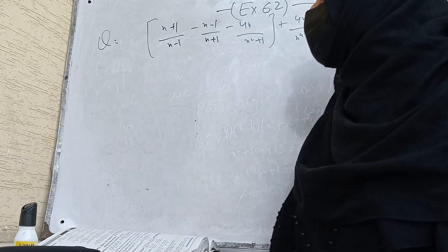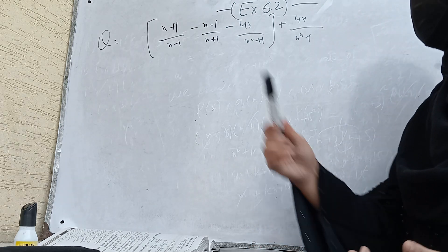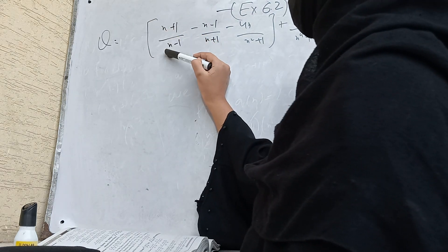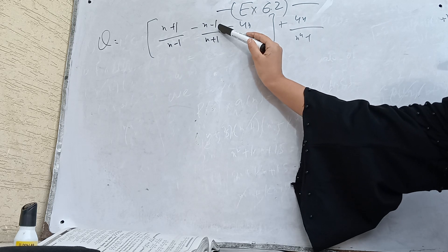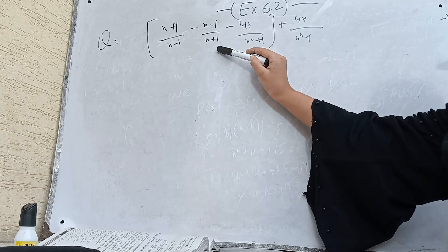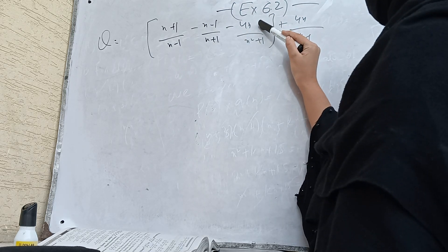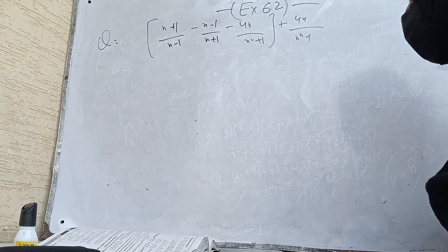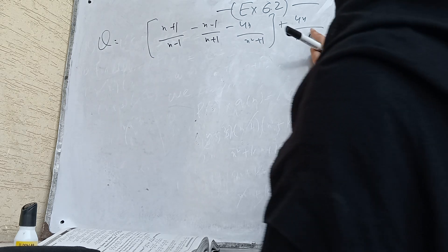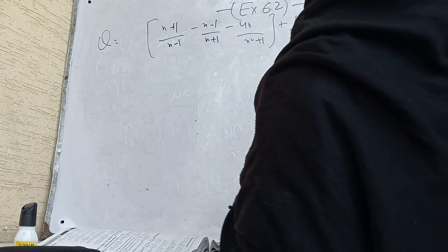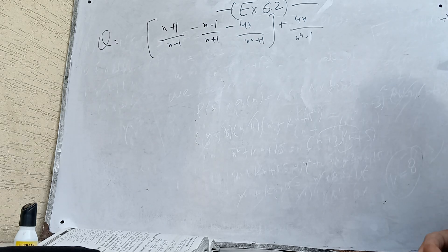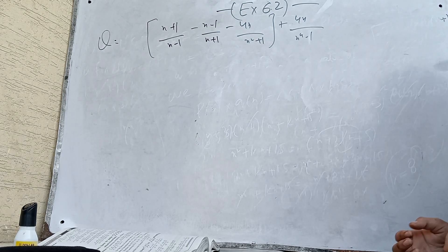So the first expression is: (x+1)(x-1) minus (x-1)/(x+1) minus 4x/(x⁴+1) plus 4x/(x⁴-1). To simplify this rational expression, we take the LCM.